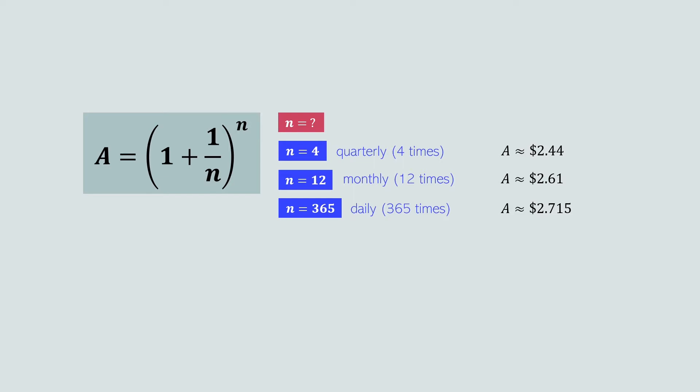There are two important observations to make at this point. First, as N increases, A also increases — the more times interest is compounded each year, the larger the final account balance, and the more interest we earn. Second, as N gets bigger and bigger, the final account balance increases but by less and less each time. This pattern becomes incredibly obvious when N gets very large, like the values shown here.